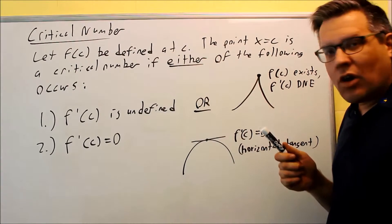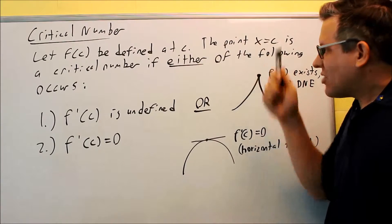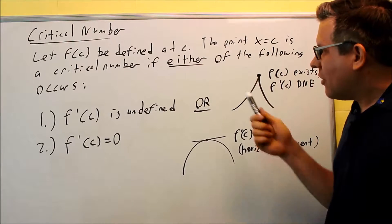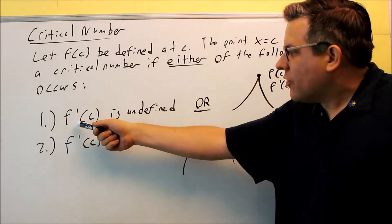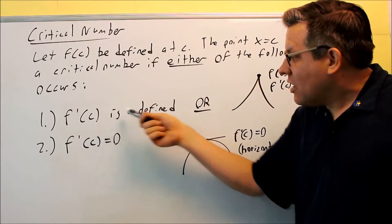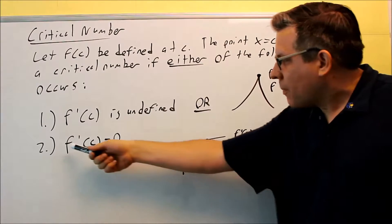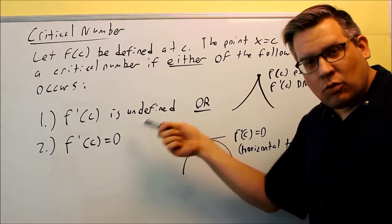And we're going to say that the point X equals C is a critical number if either one of these two things occurs. First, the derivative at C is undefined or the derivative at C equals zero.